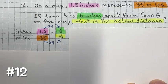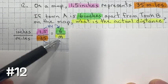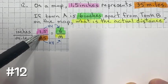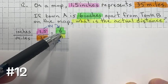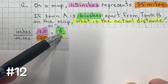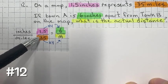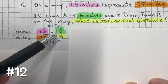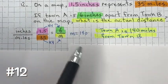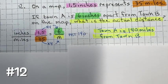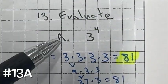To find the value of m, the actual distance in miles, we want to find the multiplier — how many times is one and a half into six. We use division: six divided by 1.5 is four, so our multiplier is four. If the inches is four times greater, the miles are also four times greater. So 35 times four equals 140. Town A is 140 miles from town B.